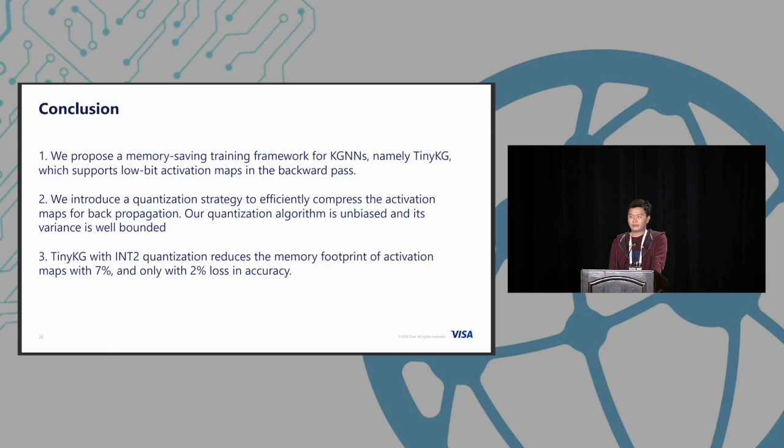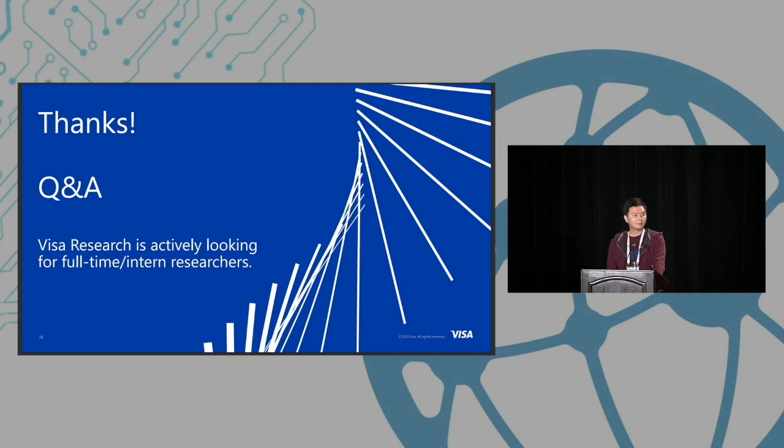This is our work. We propose a simple memory-saving training framework for knowledge graph neural networks. It can support lower bit activation maps in backpropagation. The most recent version of PyTorch supports int8, but if you want to support even lower bits, PyTorch currently doesn't support these functions. This framework can fill this gap. Second, we introduce quantization strategies to compress the activation map for backpropagation. Our quantization algorithm is very simple, unbiased, and its variance is well bounded. Third, we find that our framework with int2 can reduce memory footprint with only very small accuracy loss. Thank you so much.